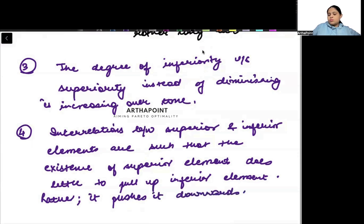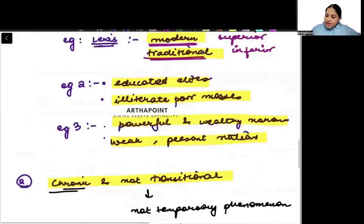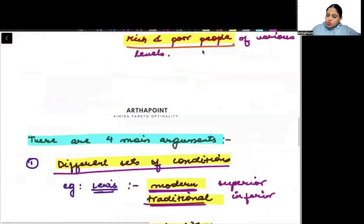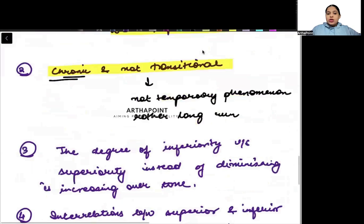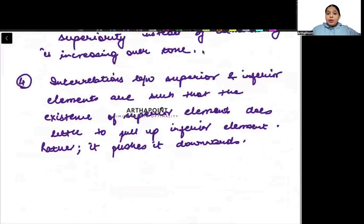So what we are saying: the modern sector does not want to pull up the traditional. The educated do not want to pull up the illiterate. The rich people, the superior people, they don't want to pull the inferior up, they want to push them down. So this is the dualism theory. I hope this is absolutely clear to you.